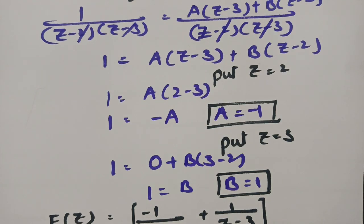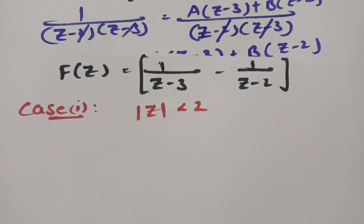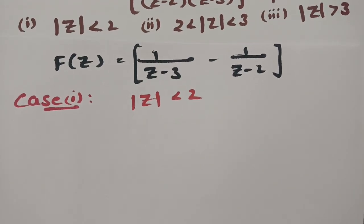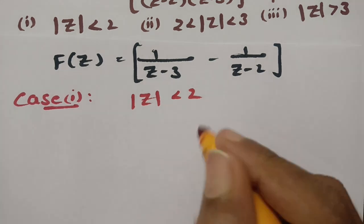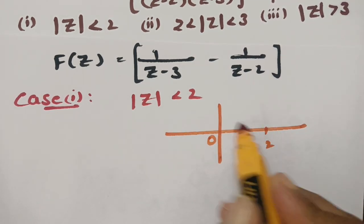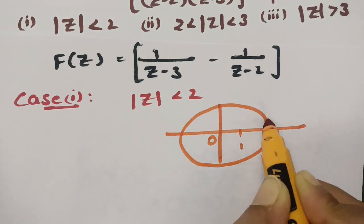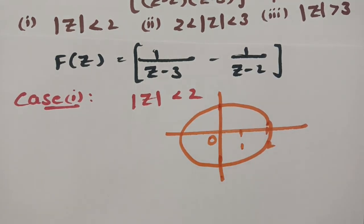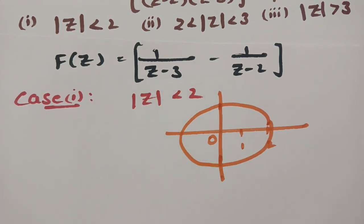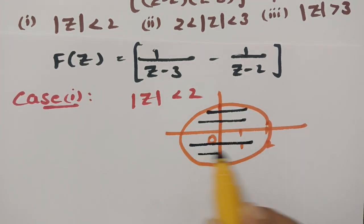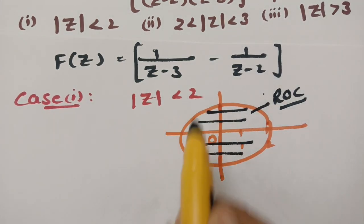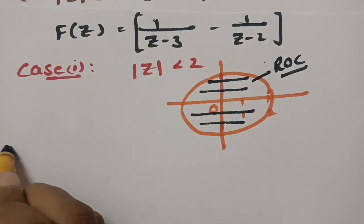For the case mod Z less than 2, I will show the region of convergence. On the number line, this is 0, this is 1, and this is 2. With 2 as radius, mod Z less than 2 means the region of convergence is within the circle of radius 2. This is the ROC for mod Z less than 2.